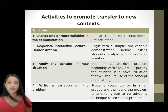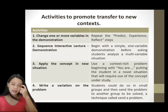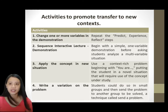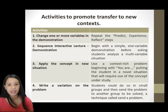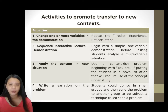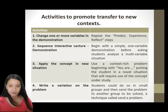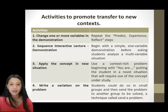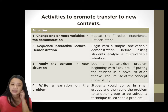Activities to promote transfer to new contexts: Number one, change one or more variables in the demonstration and repeat the predict, experience, and reflect steps. Number two, sequence interactive lecture demonstrations — begin with a simple one-variable demonstration before asking students to analyze a multivariable situation. Number three, apply the concept in a new situation using a context-rich problem that places students in a novel situation requiring use of the concept under study. Number four, write a variation on the problem — students can do so in small groups and send the problem to another group to be solved, a technique called 'send a problem.'